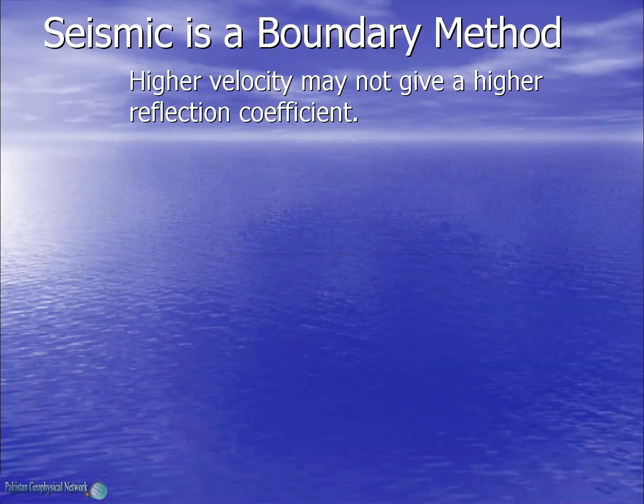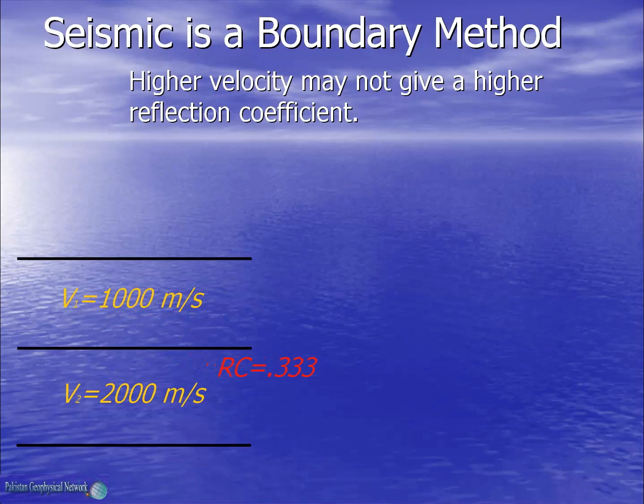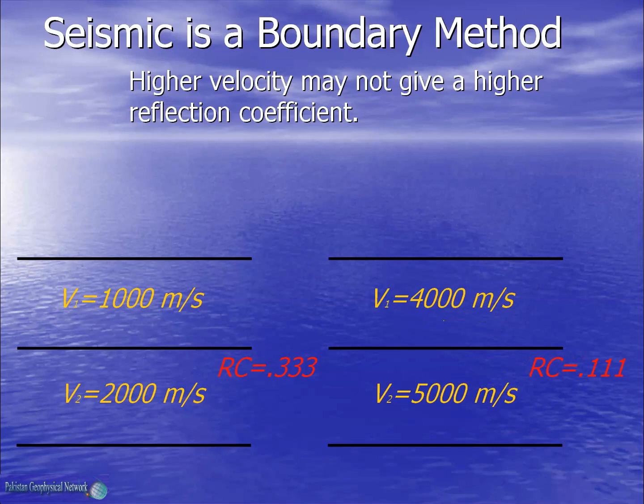Similarly, we will see that higher velocities may not give a higher reflection coefficient. Like in this case, the velocities of the two layers are 1000 meters per second and 2000 meters per second, while the reflection coefficient is 0.33. On the other hand, in this case, the two layers have much higher velocities, but the reflection coefficient is 0.11.